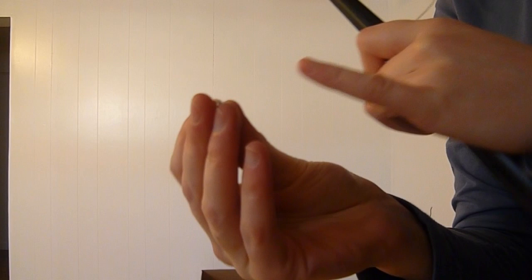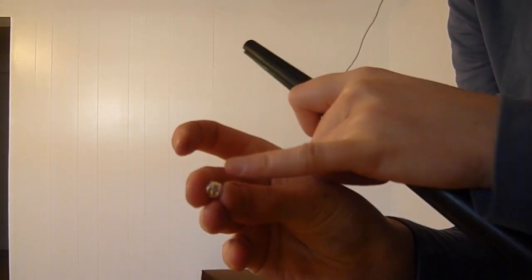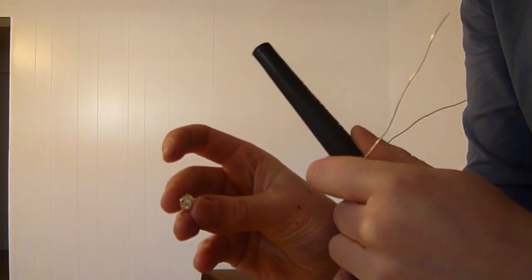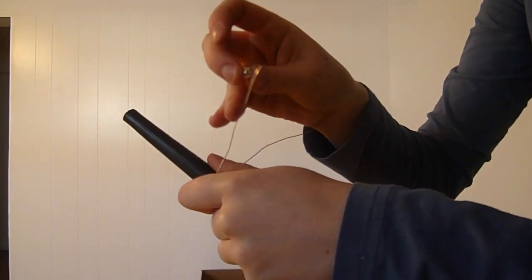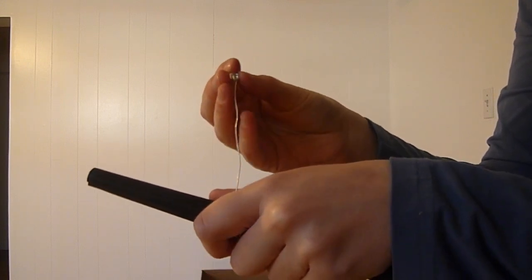Next thing you want to do now is take your beads and we're going to put them on. These beads have a hole on the left and right side and then of course they go through. So from the left side of my wire, I'm going to string it through the top portion of this bead. I have three to add.